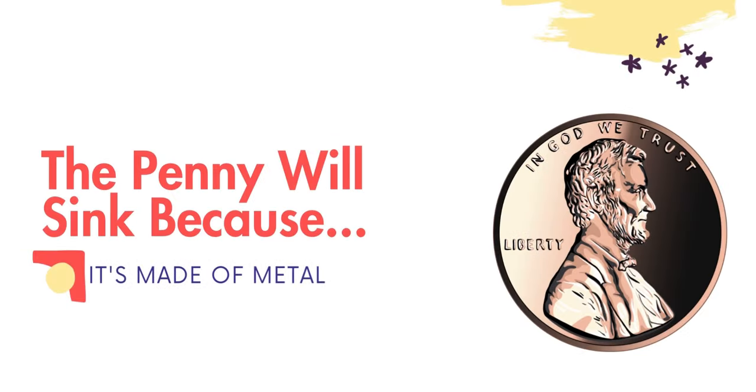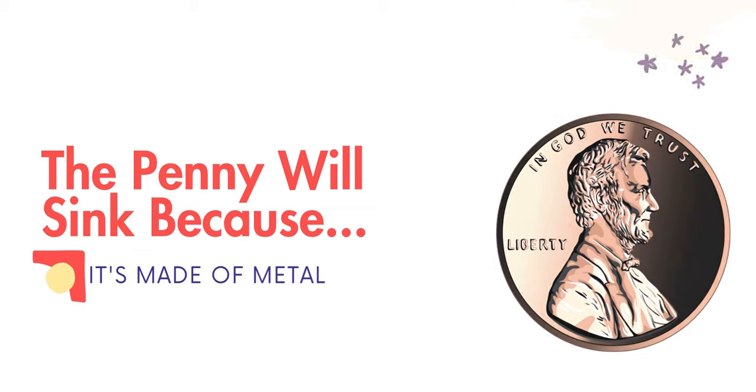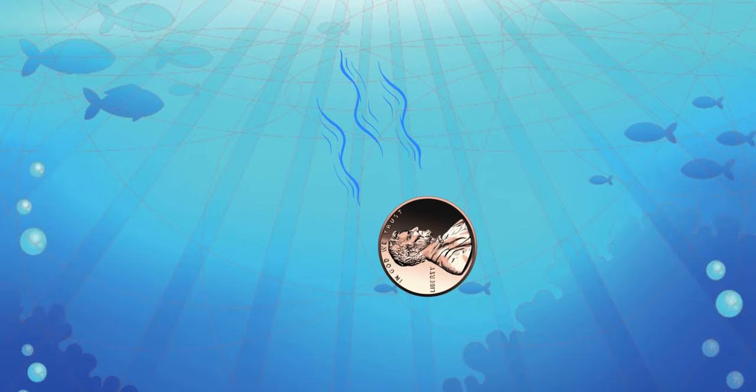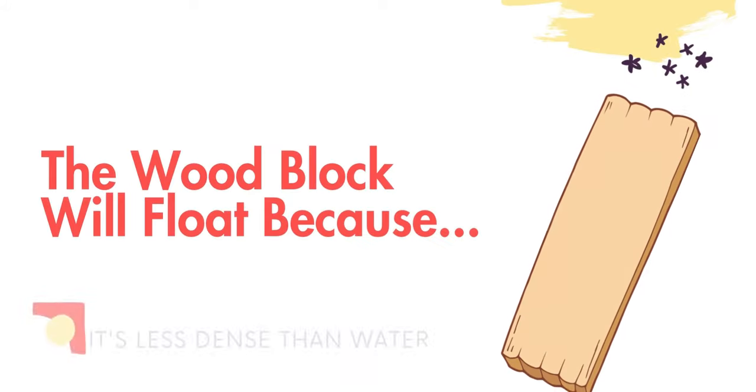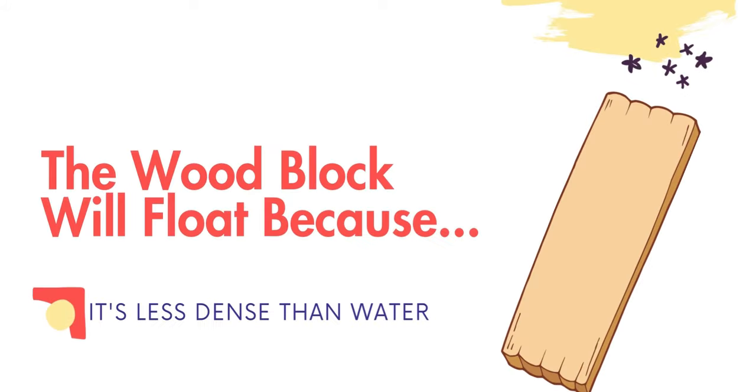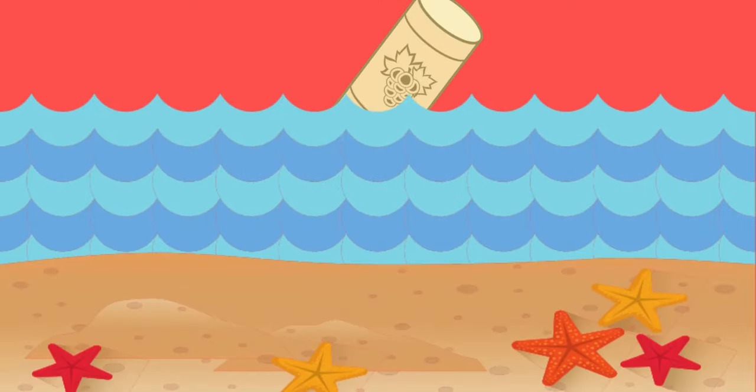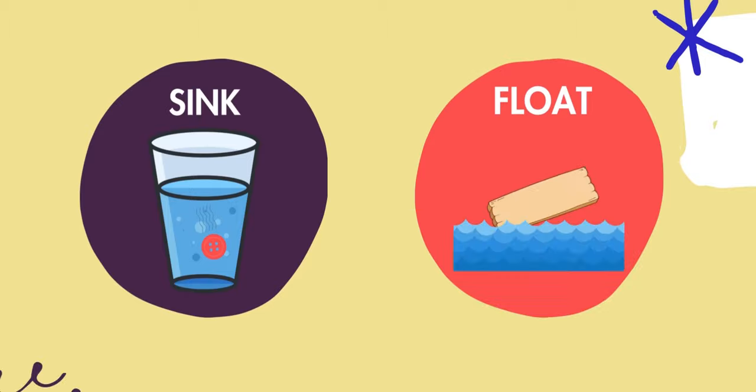An example of a very dense item is a penny. An example of a cork is less dense. The penny will sink because of the material it's made of, metal. Metal has more density than water. The molecules in metal are closer together than water molecules are.